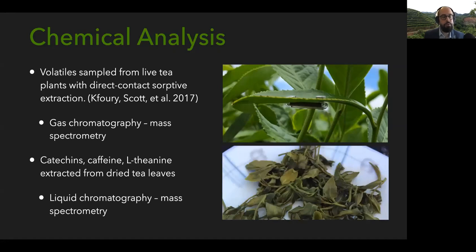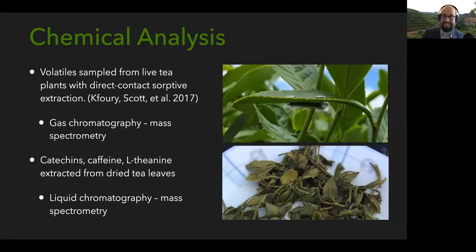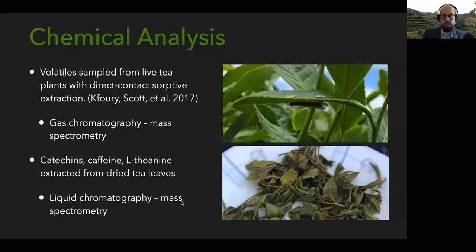For the non-volatile chemicals — catechins, caffeine, and L-theanine — I dried the leaves using the microwave in the apartment at the tea farm, since that was all I had available. Then we brought those leaves back to Tufts where I extracted those chemicals and analyzed them with liquid chromatography and mass spectrometry to identify and quantify them.